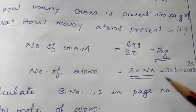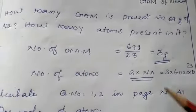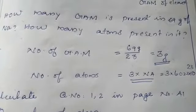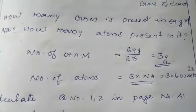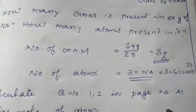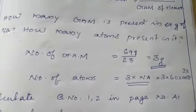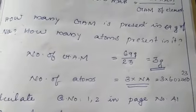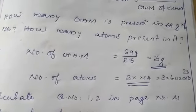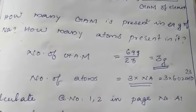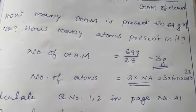The number of atoms is 3 × Nₐ. You have to do problems 1 and 2 on page 41 as homework after I give the notes.